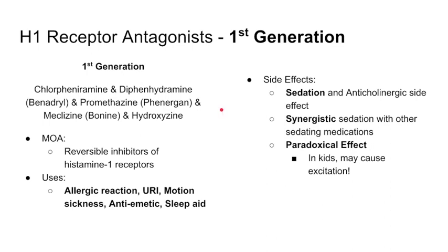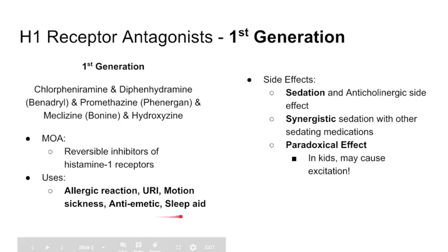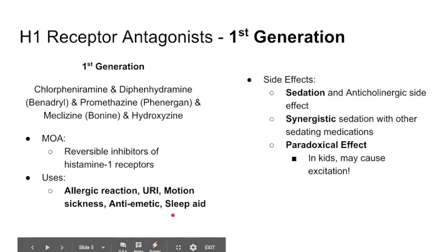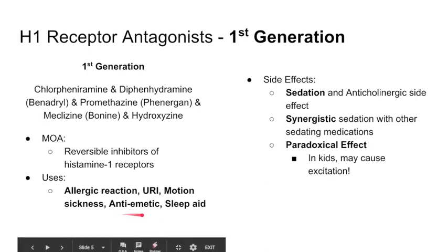These are histamine 1 receptor antagonists, and they're used for a whole slew of things you might not even realize. Obviously if you have allergies or an allergic reaction, you can take Benadryl — your H1 receptor antagonist. They're also used for upper respiratory infections. In addition, they're used for motion sickness, they're antiemetics, and they're also sleep aids. It's actually really useful to just have a little bottle of Benadryl in your house at all times because it can be used for a whole slew of things.